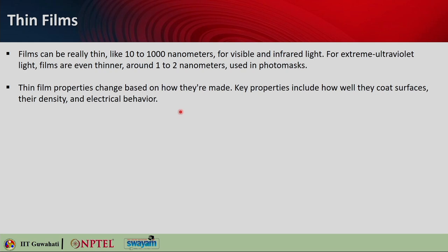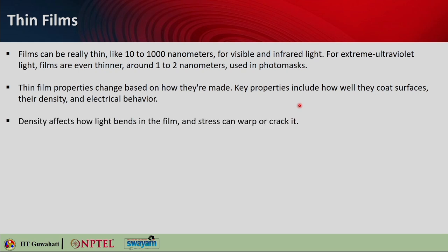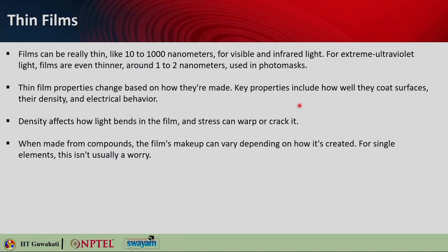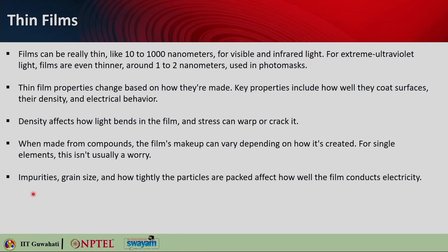Thin film properties change based on how they are made. The key properties include how well they coat the surfaces, their density and their electrical behavior. Density affects how light bends in the film, and stress can warp or crack it. When thin films are made from compounds, the film makeup can vary depending on how it is created; for single element thin films, this is not usually a worry. When you develop thin films, impurities, grain size, and how tightly the particles are packed also affect how well the thin film will conduct electricity — their conductivity depends on all these parameters.